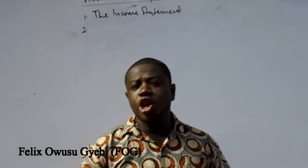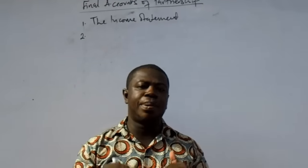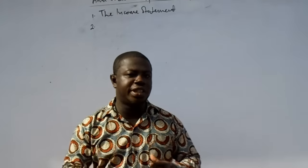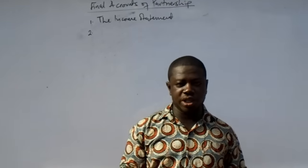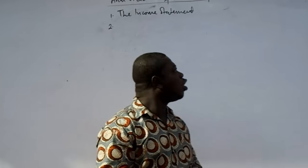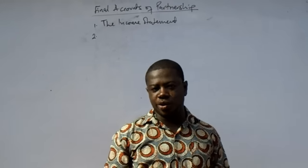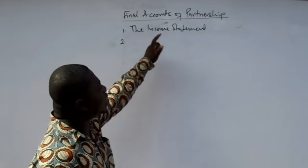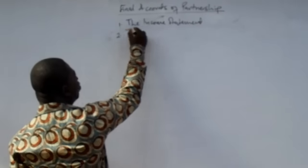After we prepare the income statement, remember that the partnership business is different from the business of the sole trader, because the partnership business usually involves two or more people who have contributed their money to form the business. Profits and losses will be shared according to the agreed profit and loss sharing ratio. After we ascertain the net profit from the income statement, we have to prepare another account called the profit and loss appropriation account.